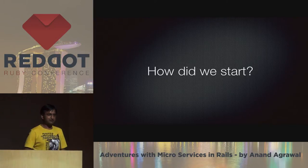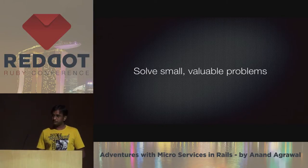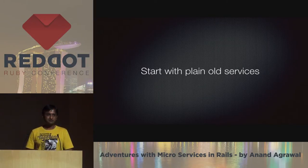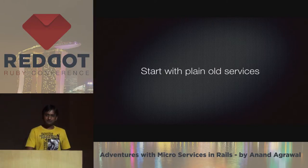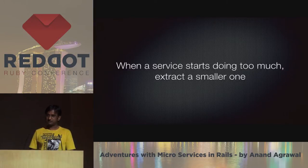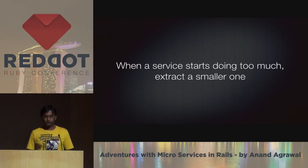But how did we start? We didn't start with 10 microservices on day one. We tried to solve small and valuable problems. Started with small pieces of functionality like a customer database and tried to migrate that first. Started with plain old services — we didn't start with microservices on day one with one resource per service. We started with plain old services and started realizing that some things could be moved out. So when services started doing too much over time, like you do object refactoring, we refactored services. If a service's responsibility grew, we extracted them into smaller ones.